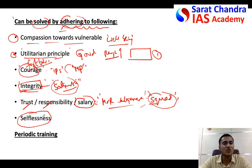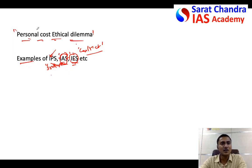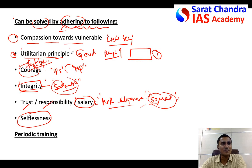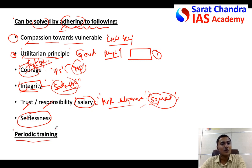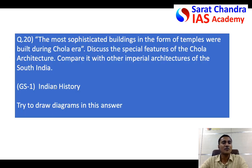Selflessness is another quality public servants should have to resolve personal cost ethical dilemmas. Notice that I am following all four principles throughout this answer: writing definitions in my own language, giving examples to help the evaluator, using ethical terms, and relating to current affairs. Finally, in the conclusion, you can say that every public servant should have periodic training on ethical conduct and be motivated constantly throughout their career to keep public duty above personal interest.